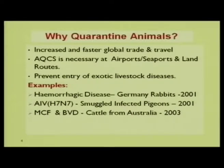Why quarantine animals? Due to increased and faster global trade and travel, animals now reach destinations by air within hours and by sea within days. Earlier, animals were shipped through sea routes and the incubation period — the time from when an infectious organism (viral, bacterial, or fungal) enters the body to when symptoms appear, usually 21 days or more — meant symptoms would appear during transport. Because travel is now so fast, there is increased emphasis on quarantine of animals.